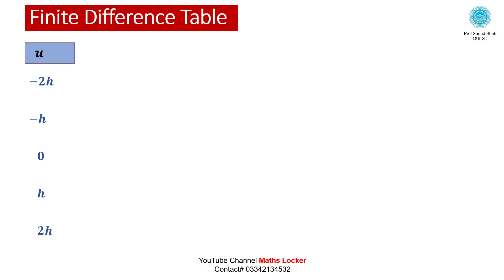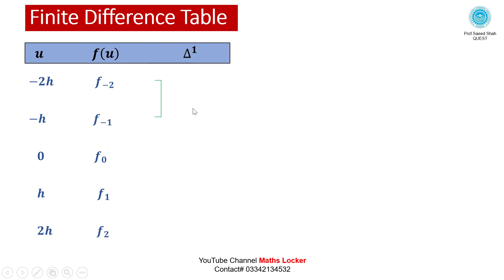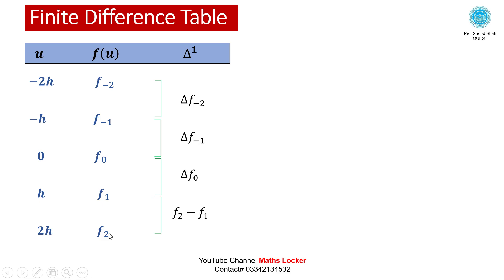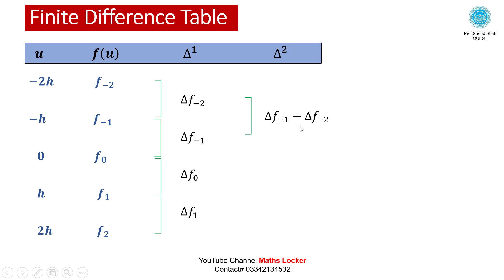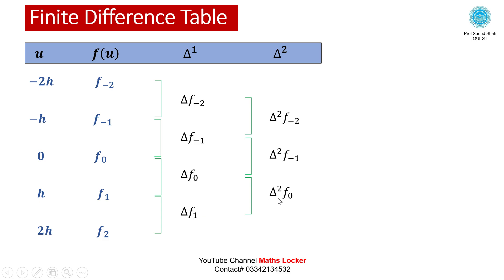To build the Finite Difference Table, we write values of u in the first column and values of f(u) in the second column. Taking the first difference: f(-1) minus f(-2) gives delta f(-2); f(0) minus f(-1) gives delta f(-1); f(1) minus f(0) gives delta f(0); f(2) minus f(1) gives delta f(1). Taking the second difference: delta f(-1) minus delta f(-2) gives delta² f(-2); delta f(0) minus delta f(-1) gives delta² f(-1); delta f(1) minus delta f(0) gives delta² f(0).